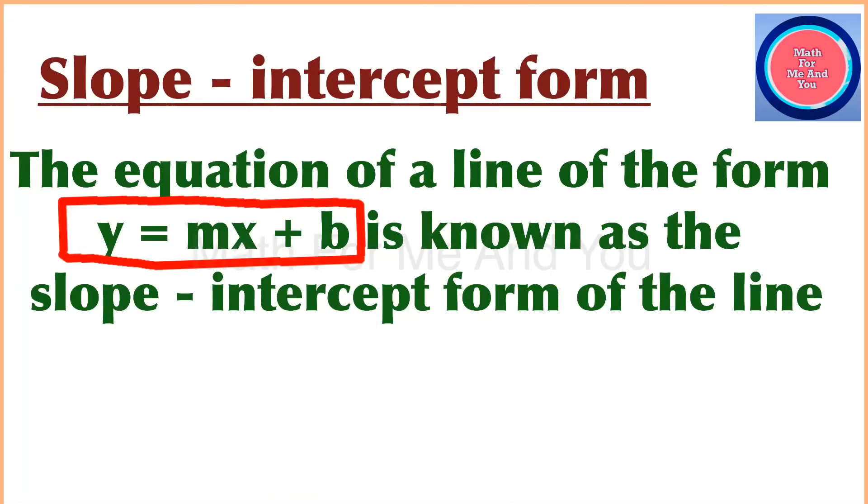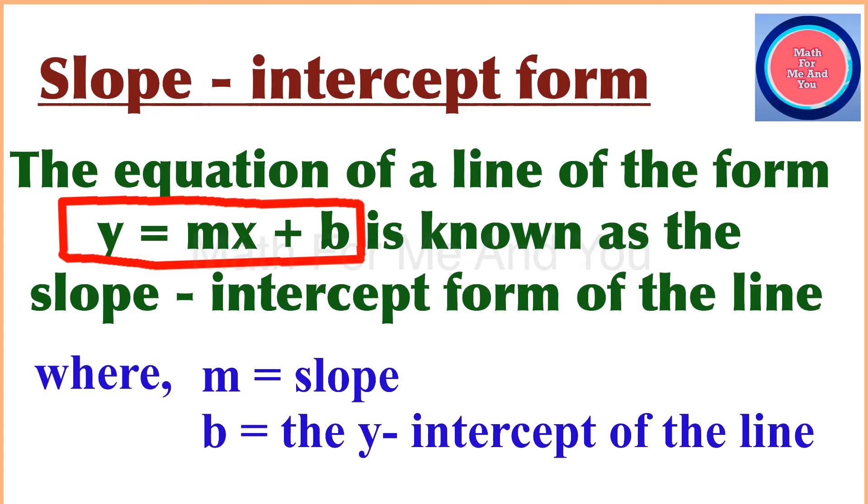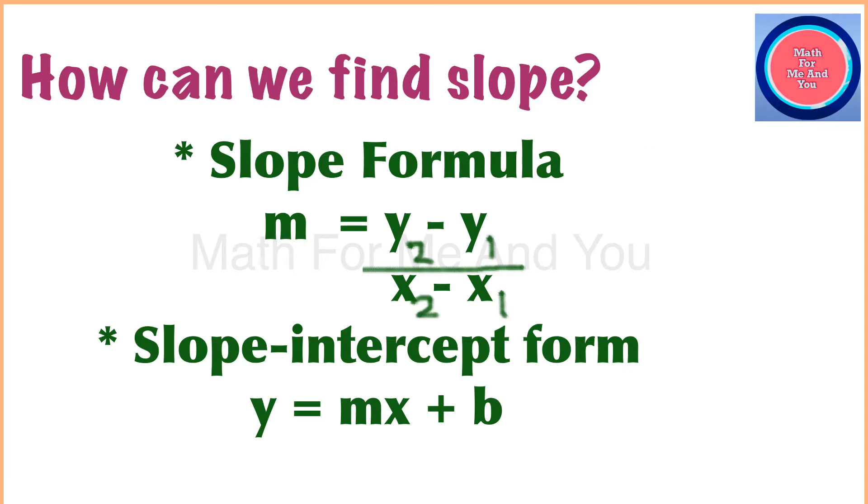Slope intercept form: the equation of a line of the form y equals mx plus b is known as slope intercept form. m is the slope, b is the y-intercept of the line. To find slope, we use slope formula m equals y2 minus y1 over x2 minus x1, or slope intercept form y equals mx plus b.